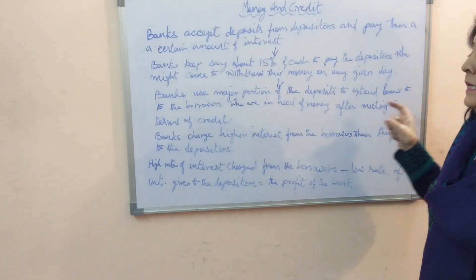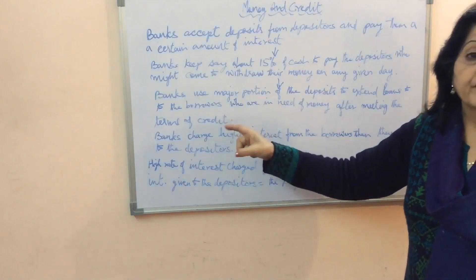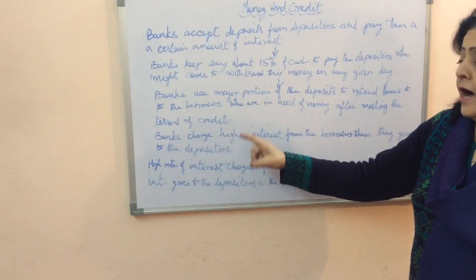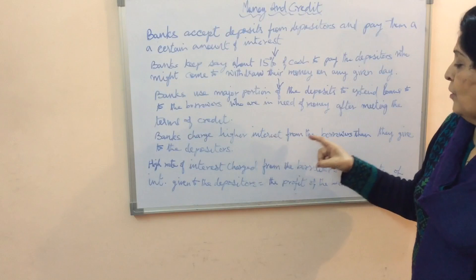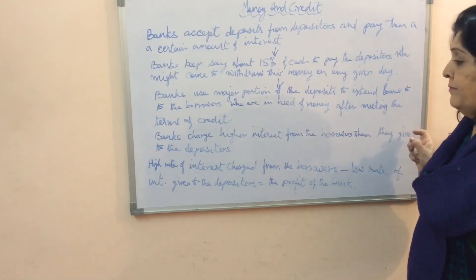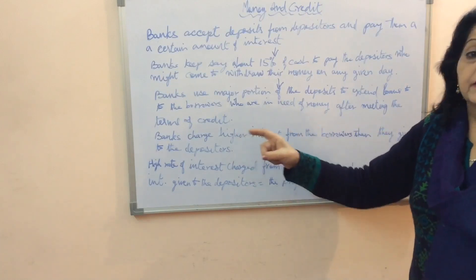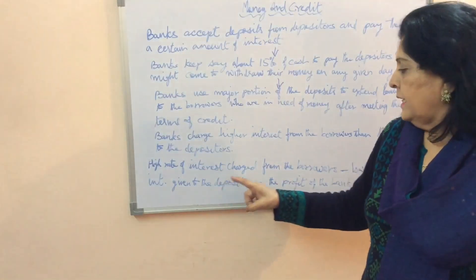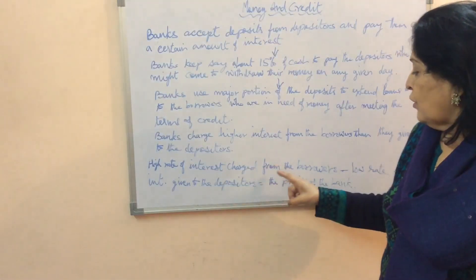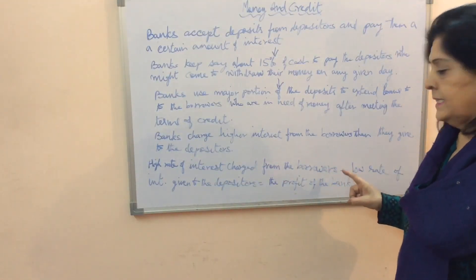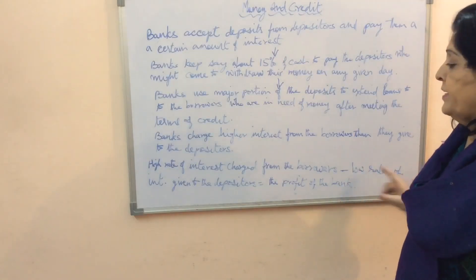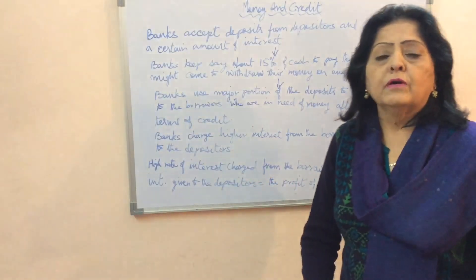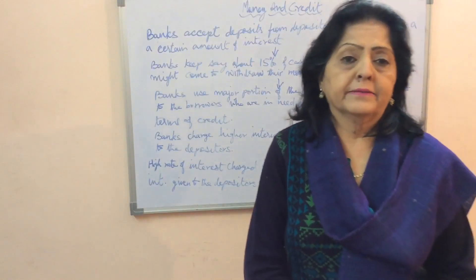Banks use the major portion of deposits to extend loans to borrowers who are in need of money. Banks charge a higher rate of interest from borrowers than they give to depositors. The high rate of interest charged from borrowers minus the low rate of interest given to depositors equals the profit of the bank.